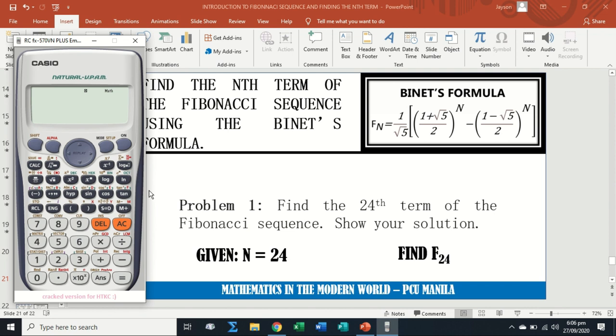Remember, when using the calculator, how the formula is written should be how you input it. Let's start with the fraction: one over square root of five, times—since we don't have a bracket, we will be using double quantity. We have one plus square root of five, and then down we have two. Close, enclose it, and raise to—since we are looking for 24, then our n is 24.